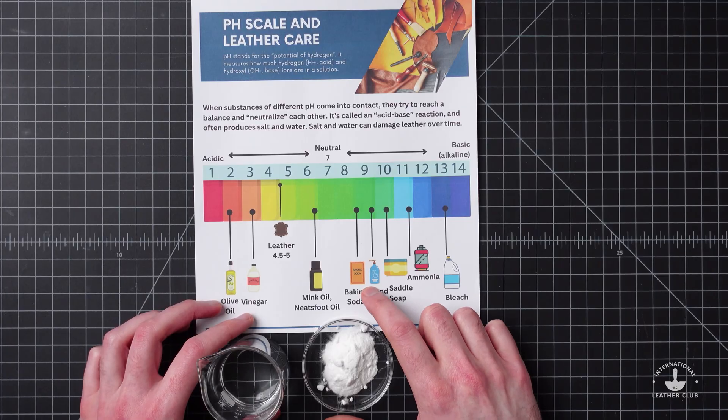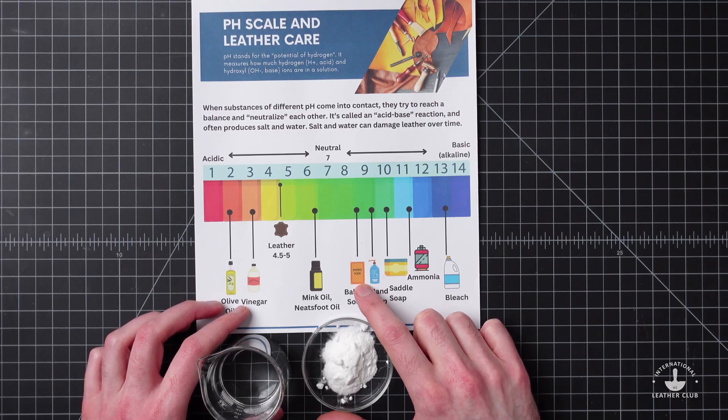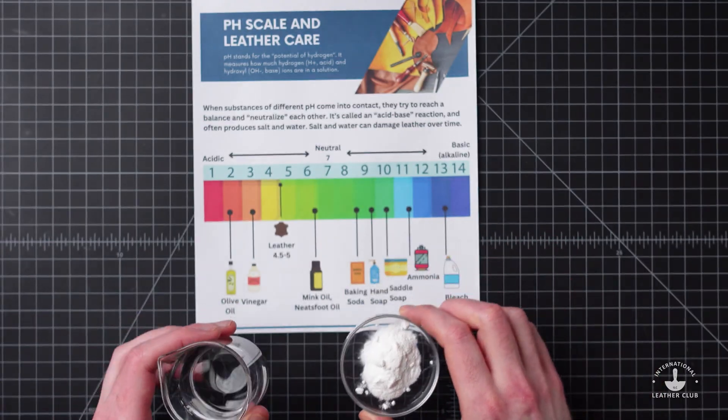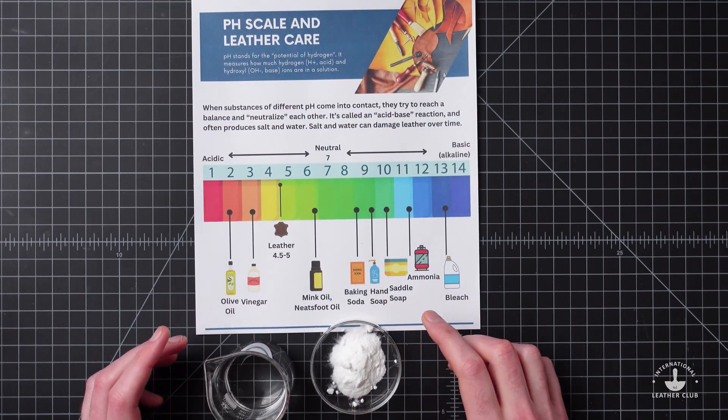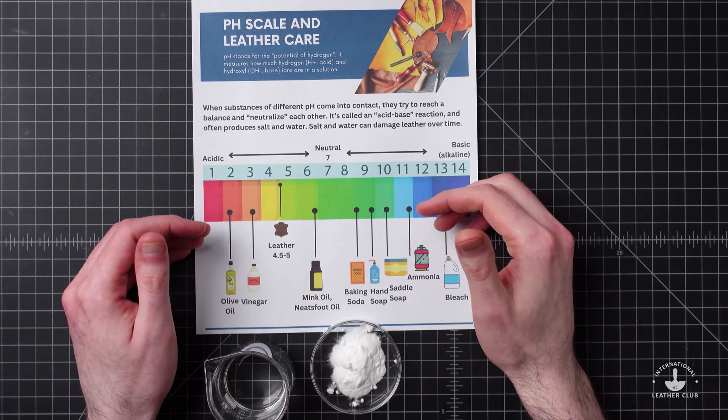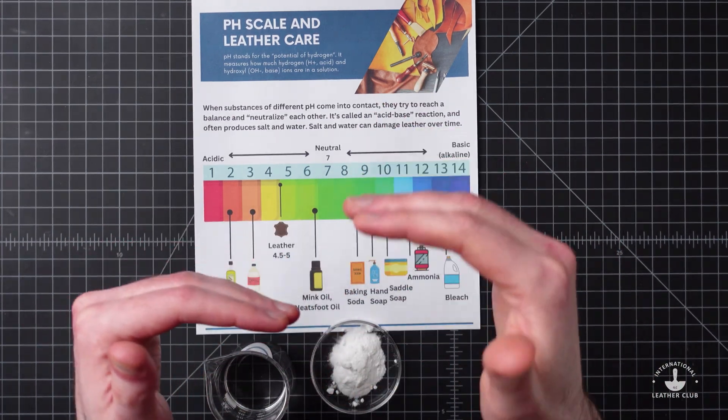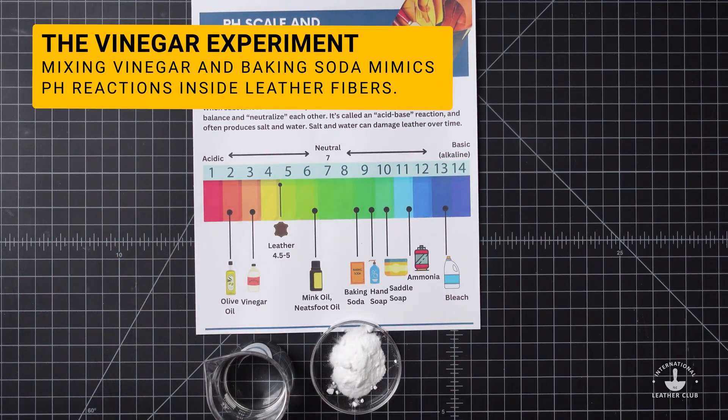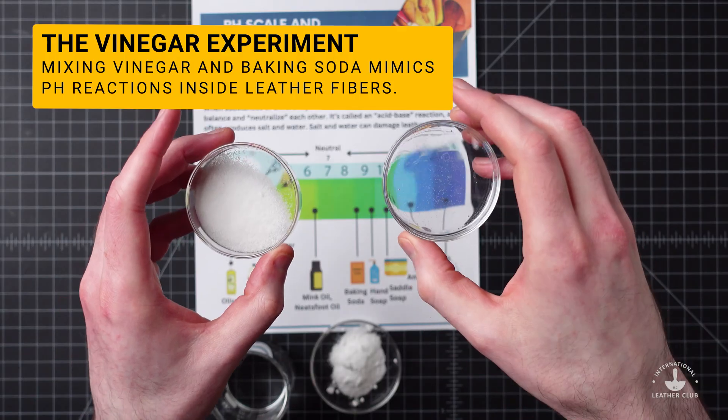It's going to be around 1 million times more basic in that baking soda than our vinegar. When we combine them, they're going to neutralize and balance one another out using that pH reaction, the acid-base reaction. When that happens, it's going to produce salt, water, and a whole lot of carbon dioxide gas.